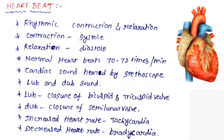The cardiac sound is heard by a stethoscope. The heart forms a 'lub' and 'dub' sound. The lub sound is formed by the closing of the bicuspid and tricuspid valves, while the dub sound is formed by the closing of the semilunar valve.